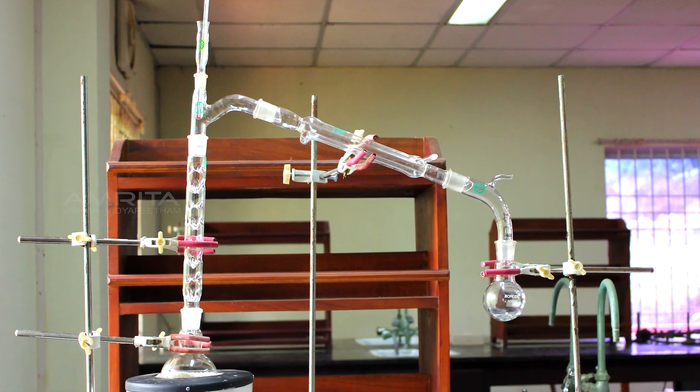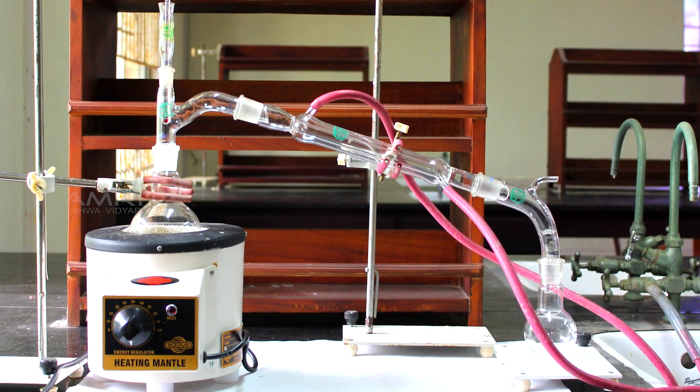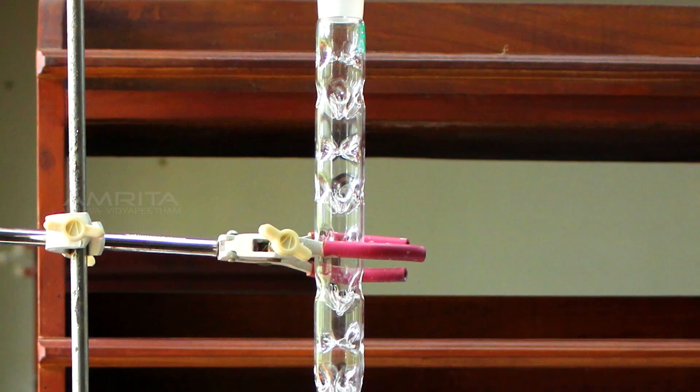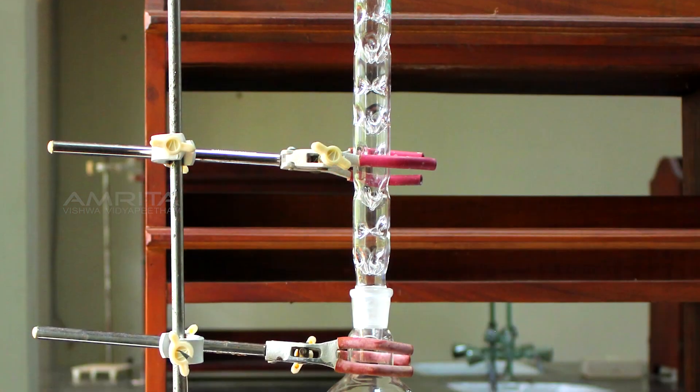The apparatus for fractional distillation is similar to that of simple distillation except that a fractionating column is fitted in between the distilling head and the RB flasks.